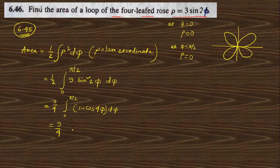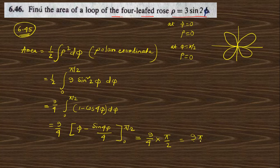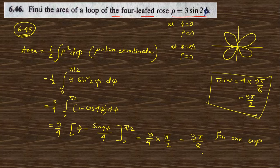Integrating, we get [φ − sin(4φ)/4] from 0 to π/2. Putting in π/2: sin(2·π/2) = sin(π) = 0, and sin(0) = 0, so those parts vanish. We get only (9/4)·(π/2) = 9π/8. This is for 1 loop. For the total, multiply by 4: total equals 4 × 9π/8 = 9π/2.